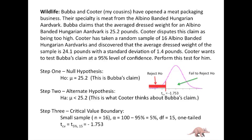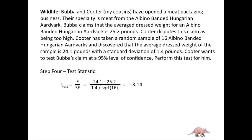Our critical value is negative 1.753. The test statistic is always the effect size divided by the standard error. The effect size is x-bar minus the claim: 24.1 minus 25.2, all divided by s over the square root of n, which is 1.4 over the square root of 16. Subtract the numerator, take the square root of 16 to get 4, divide 1.4 by 4, then divide the numerator by that — you should come up with negative 3.14.